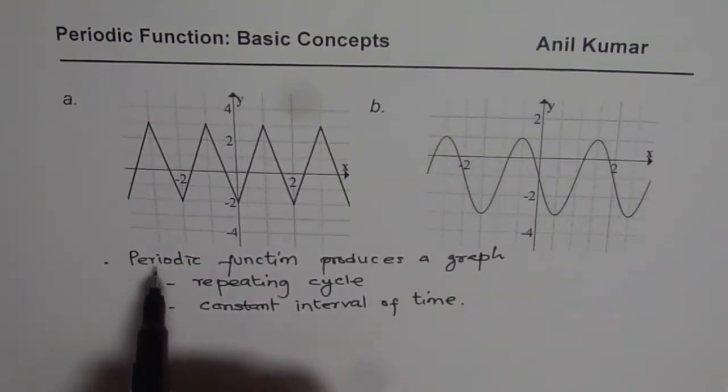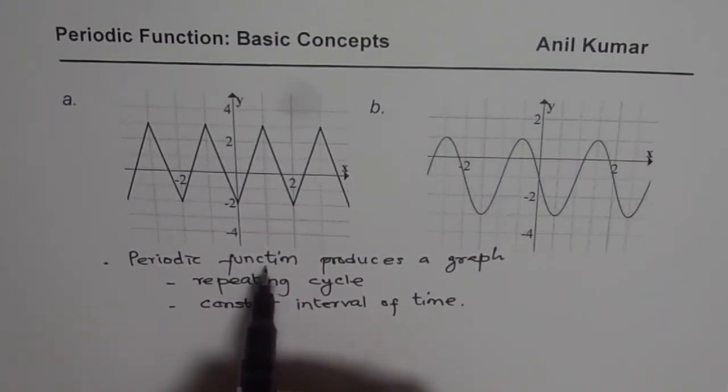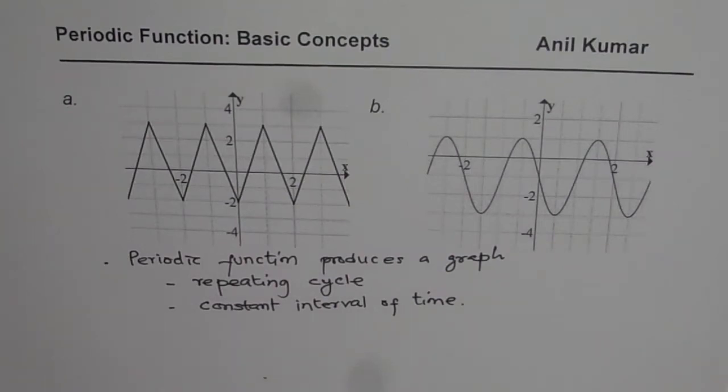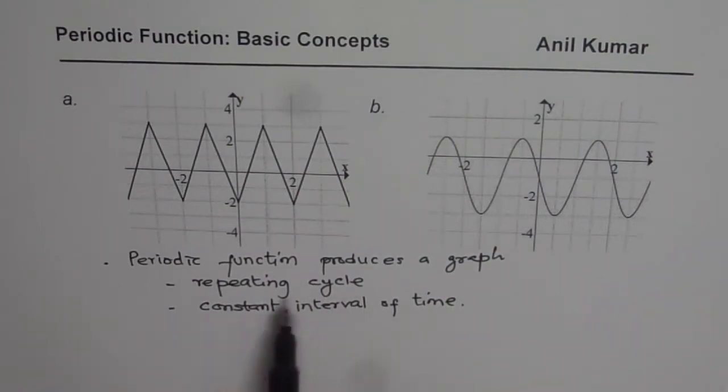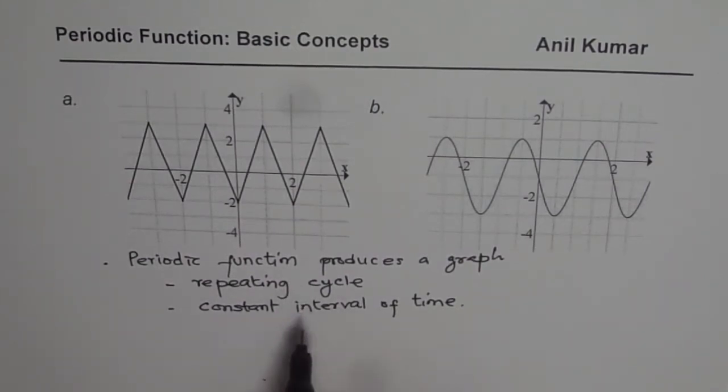Remember, a periodic function could be given in any form. You could write an equation, you could write a description, you could provide data. But the result is that when you graph it, then what you see is something which repeats over a constant interval of time. So these are two major characteristics which define a periodic function. Nothing else is so important as these two.